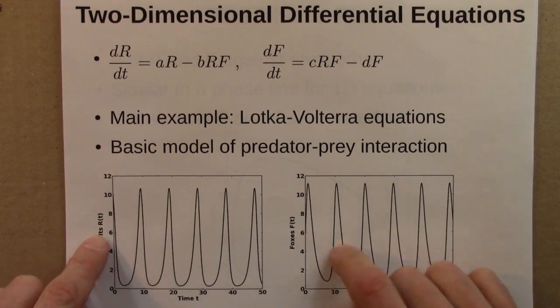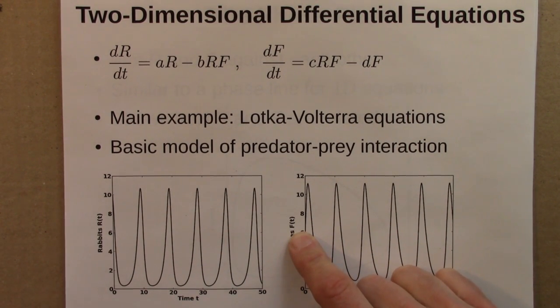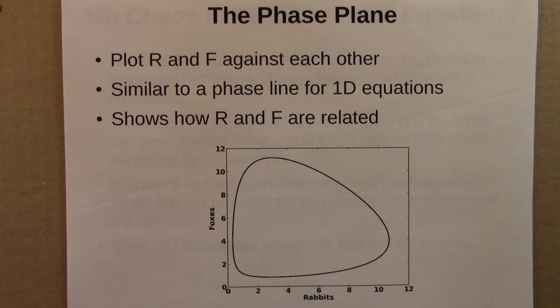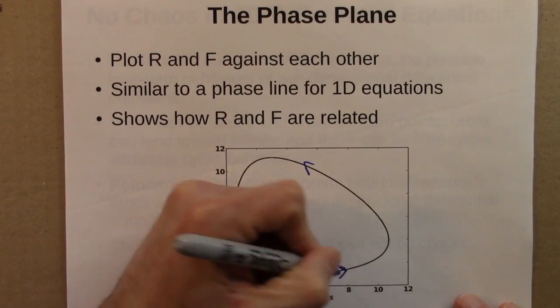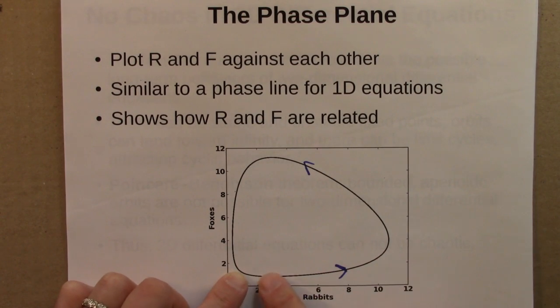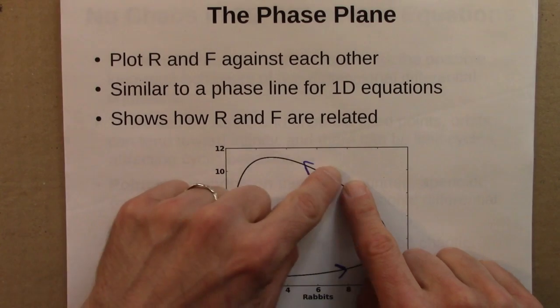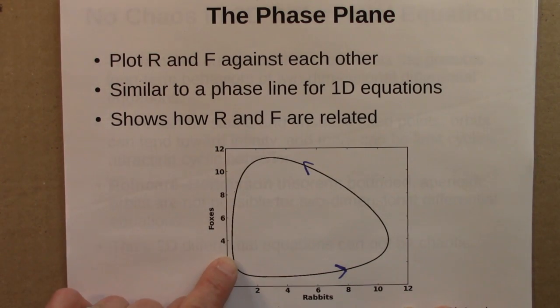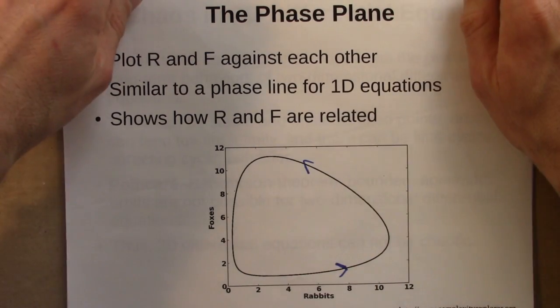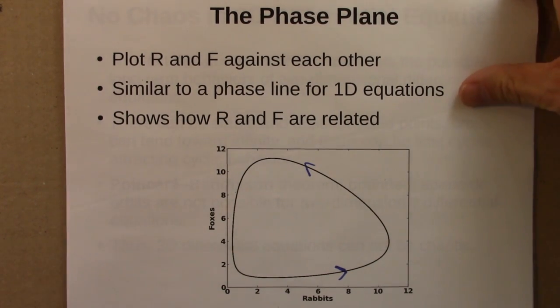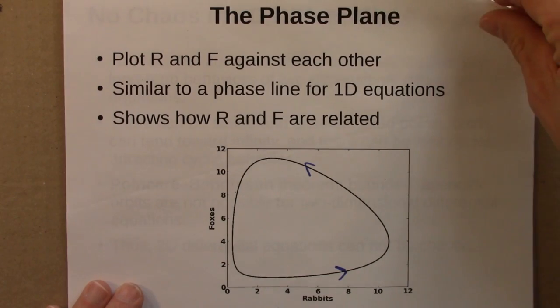But then we could plot R against F. So we lose time information, but it will show us how the rabbits and the foxes are related. And if we do that, we get a picture that looks like this. Just a reminder that this curve goes in this direction. And so the foxes and rabbits are cycling around. The rabbit population increases. Then the fox population increases. Rabbits decrease because the foxes are eating them. Then the foxes decrease because they're sad and hungry because there aren't rabbits around and so on. So this is similar to the phase line for one dimensional equations, but it's called a phase plane because it lives on a plane. And this shows how R and F are related. And phase plane and then phase space is one of the key geometric construction analytical tools used to visualize behavior of dynamical systems.